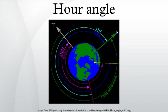At solar noon the hour angle is 0.000 degrees, with the time before solar noon expressed as negative degrees, and the local time after solar noon expressed as positive degrees.